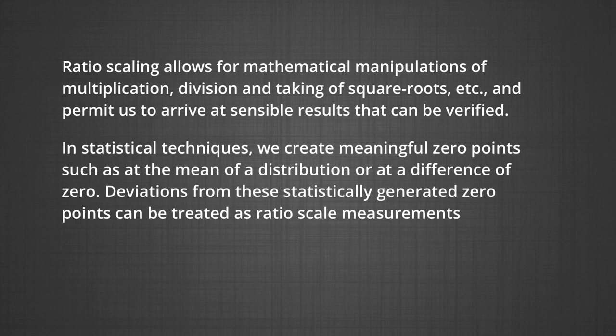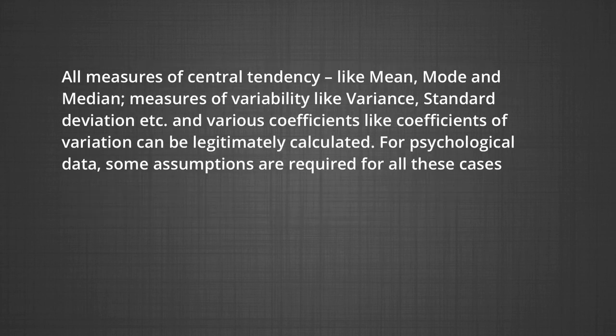We create meaningful zero points such as at the mean of a distribution or at a difference of zero. Deviations from these statistically generated zero points can be treated as ratio scale measurements. In simple words, all measures of central tendency like mean, mode, and median, measures of variability like variance and standard deviation, and various coefficients like coefficient of variation can be legitimately calculated for psychological data, though some assumptions are required in all these cases.